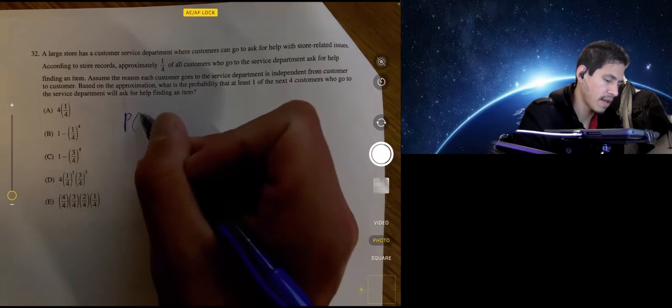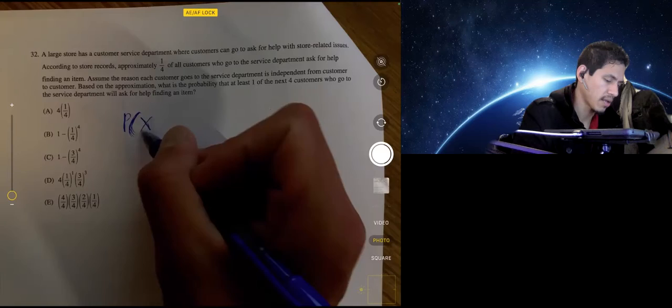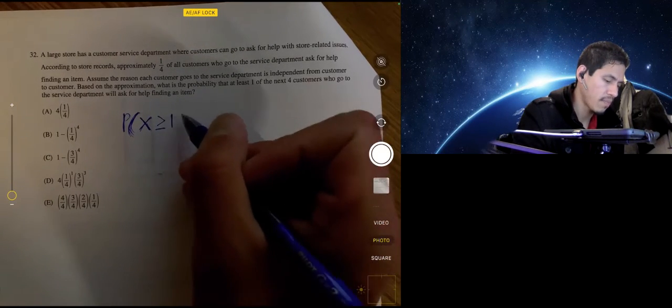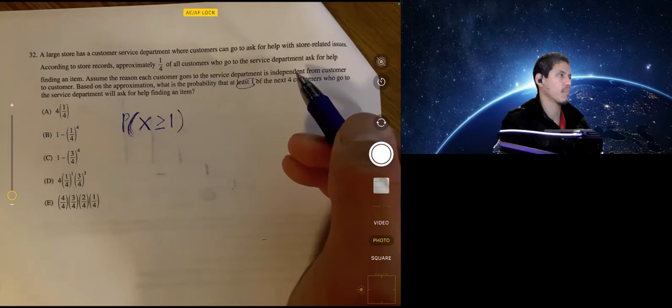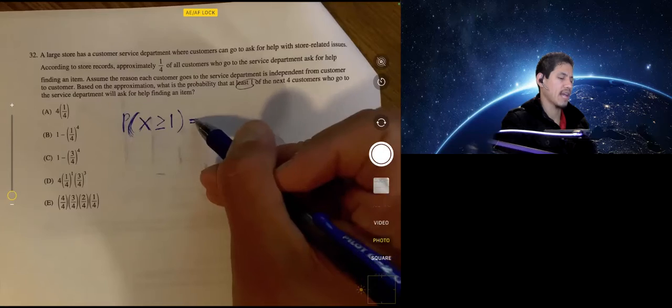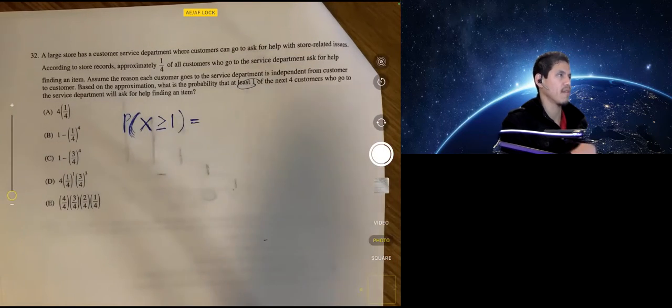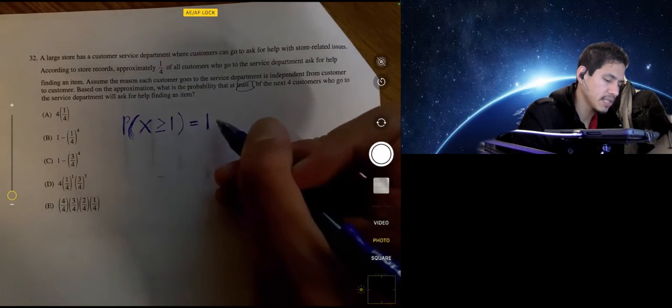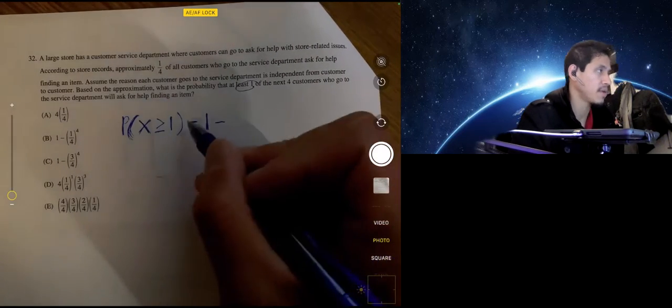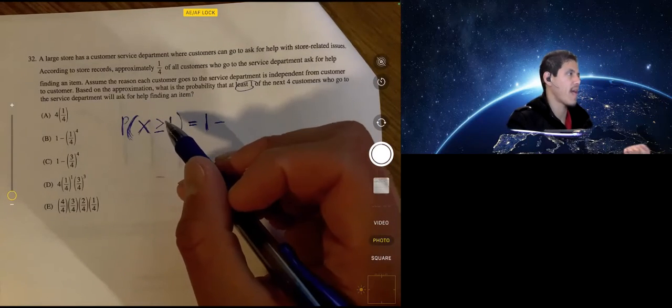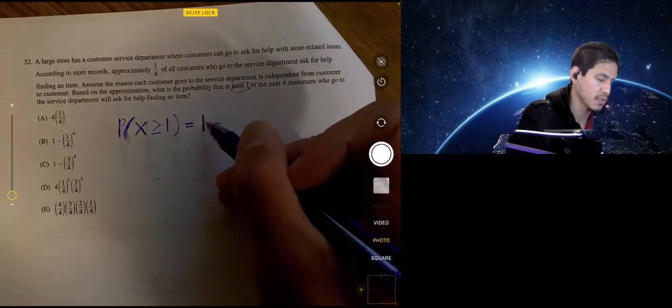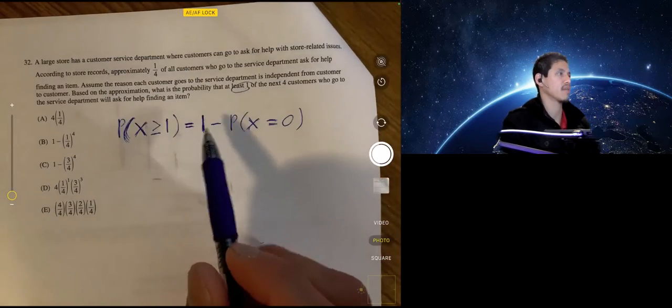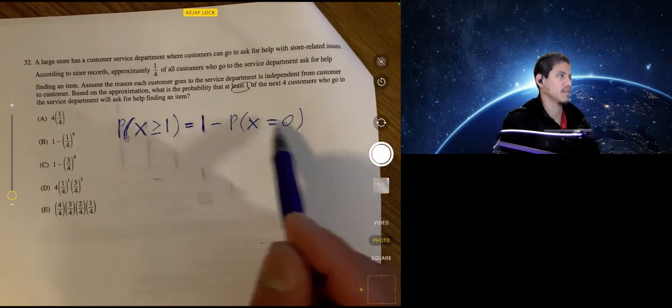Okay, so we're trying to find this. What's the probability that if we let X represent the number of customers that are going to go ask for help? What's the probability that X is greater than or equal to one? Because if you say at least one, it could be one, two, three, or four. So we don't want to go about finding that because there's a whole bunch of calculations and combinations. So instead, we want to do one minus the contrapositive or the opposite of not having at least one, which is having zero. So one minus the probability that zero customers go would be equal to the probability that at least one customer would go. So this is a much easier calculation to figure out.